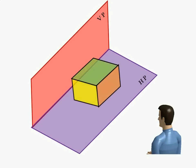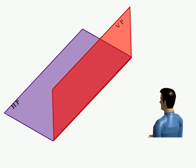In first quadrant, object is above HP and in front of VP. In second quadrant, object is above HP and behind VP.